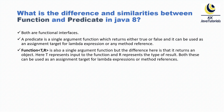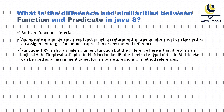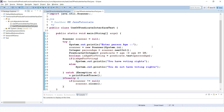On the other side, the Function functional interface is also a single-argument function, but the difference is that it returns an object instead of a boolean true or false. Here, T represents the input to the function and R represents the return type or result. Function can also be used as an assignment target for a lambda expression or method reference.